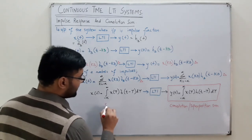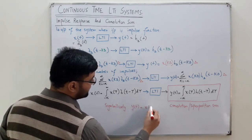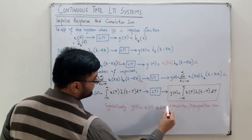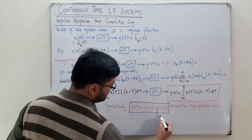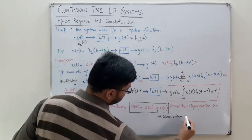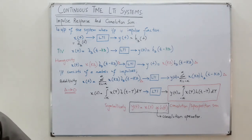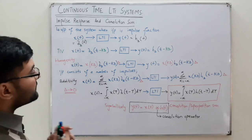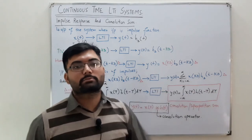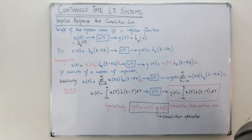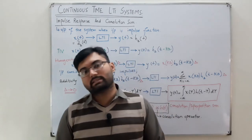Symbolically, this is represented as y of t equals x of t convolved with h of t, where the star symbol is the convolution operator. The definition: convolution is a mathematical tool used to calculate the output of the system if the input and impulse response of the system are known.